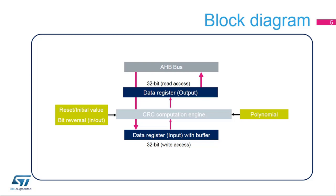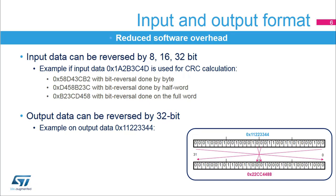The CRC computation engine will hold the result of any previous CRC calculation, which then becomes the initial value for the next calculation, thus allowing a new CRC computation of a data block. The input and output format is fully configurable to reduce the software overhead, allowing applications to manage different endian schemes.